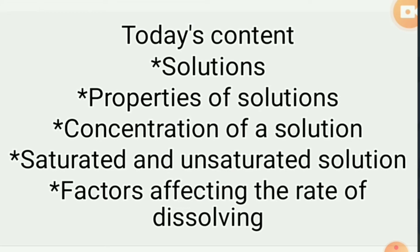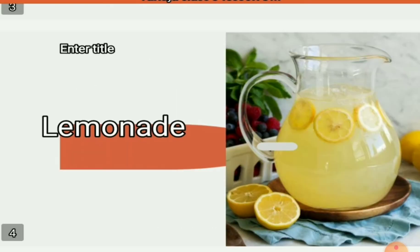Here is a slide showing lemonade. In the previous class we saw the explanation of this. Lemonade is made up of sugar, salt, water, and lemon juice. This is a homogeneous mixture — that is something we learned in the last class.